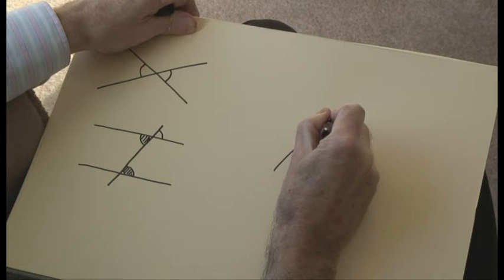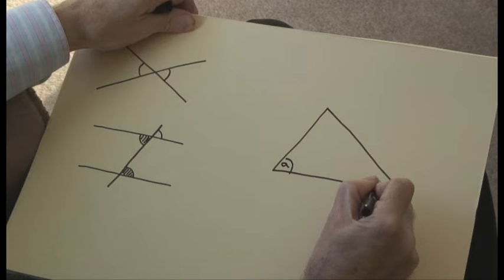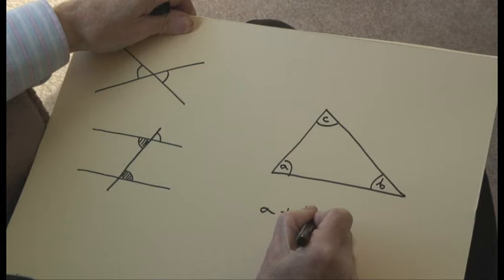And I should now like to use that result, the result about alternate angles, to prove something that I've always viewed as fairly remarkable. And that is, if you take any triangle, no matter what its shape, and you add up the three angles, which I'll label A, B and C, then you always get 180 degrees. A plus B plus C is 180 degrees.